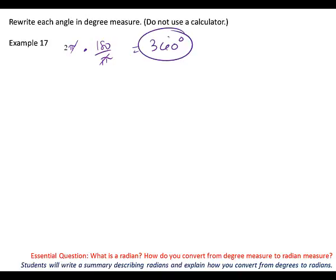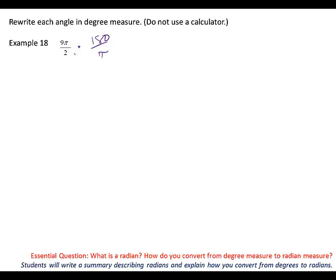Go ahead and everybody try number 18. What did you multiply by? What goes? Pi's cancel. What else? Two into 180. And you multiplied — what did you get? 810 degrees.